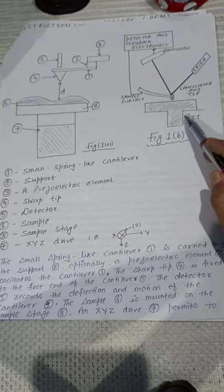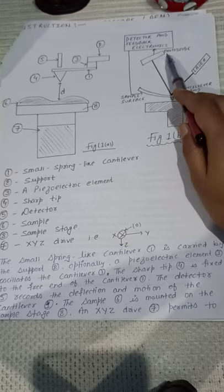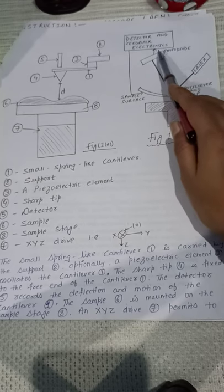It is our PZT, it is our cantilever and tip, it is our laser, it is photodiode, and it is our detector and feedback electronics.